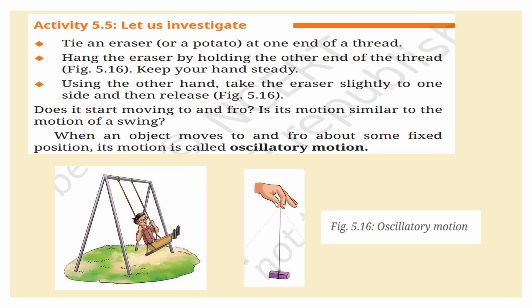Let us do another activity. Tie an eraser or a potato at one end of a thread and hang it by holding the other end. Keep your hand steady, then using the other hand, take the eraser slightly to one side and release — similar to the motion of a swing. Does it start moving to and fro? Yes. When an object moves to and fro about some fixed position, its motion is called oscillatory motion.